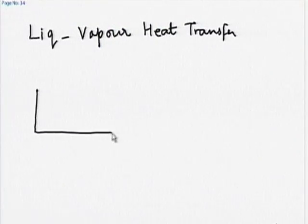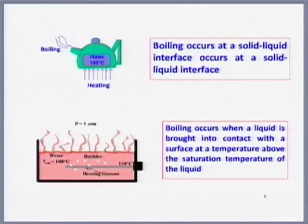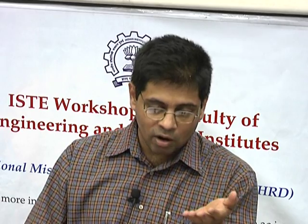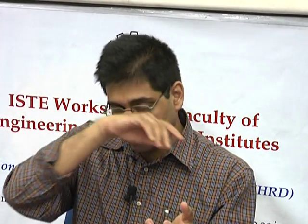Boiling is of two types: pool boiling and flow boiling. Pool boiling means I have a stagnant liquid and I am changing its temperature by external heating, causing it to boil. What is the difference between boiling and evaporation? Evaporation happens even at room temperature — lake water decreases during summer due to evaporation, without reaching the boiling point. There is no bubbling or agitation; it is a surface phenomenon where water gets transformed into the vapour phase.